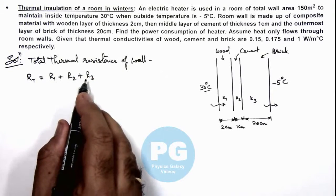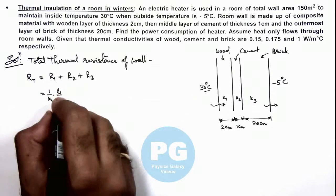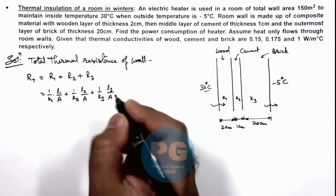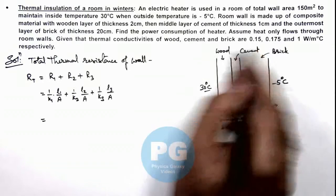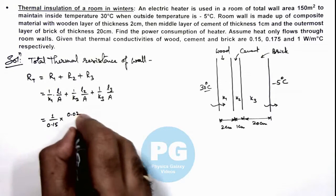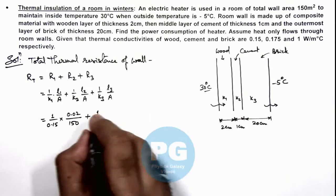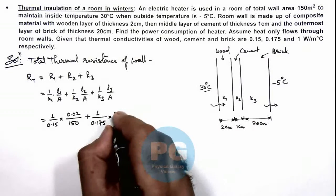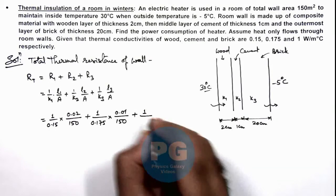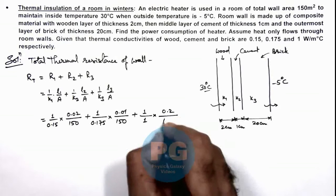Using the relation for resistance, this gives (1/k1)(L1/A) + (1/k2)(L2/A) + (1/k3)(L3/A). Substituting values: for the first layer wood, thermal conductivity is 0.15, so it is (1/0.15) multiplied by thickness 0.02 meters divided by wall area 150 square meters. Plus for the second layer cement, conductivity is 1 divided by 1, thickness is 1 centimeter (0.01 m), wall area 150 square meters. Plus for the brick wall, conductivity is 1, thickness is 0.20 meters divided by 150.